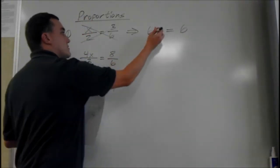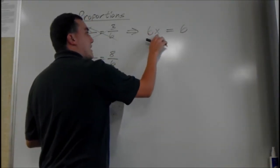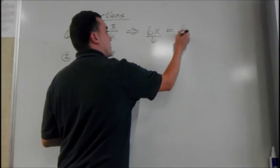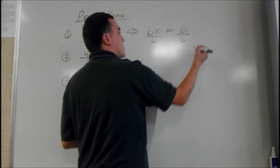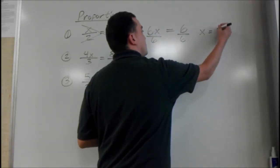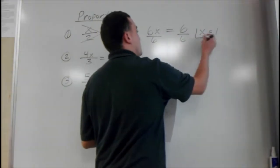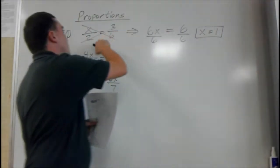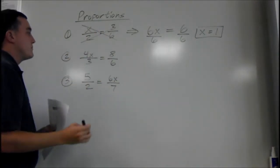To solve this, since 6 and x are multiplying, to get x by itself we divide by 6 on both sides. So x equals 1. That's it for that one. And if you plug that back into the original, it should work out.